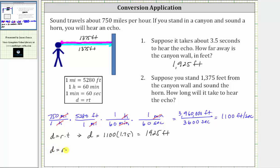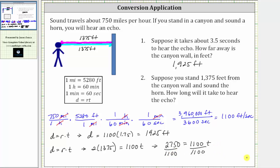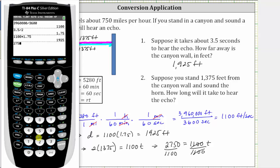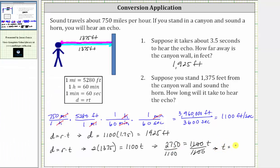Using our formula, distance equals rate times time: the distance d is two times 1,375 feet, which equals the rate of 1,100 feet per second times the unknown time t. Two times 1,375 equals 2,750, giving us 2,750 equals 1,100t. To solve for t, we isolate t by dividing both sides by 1,100. Simplifying, 1,100 divided by itself is one, leaving t equal to 2,750 divided by 1,100, which equals 2.5 seconds.